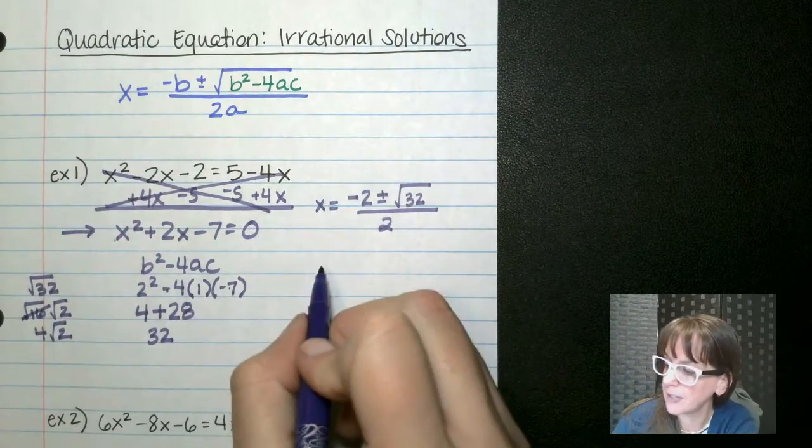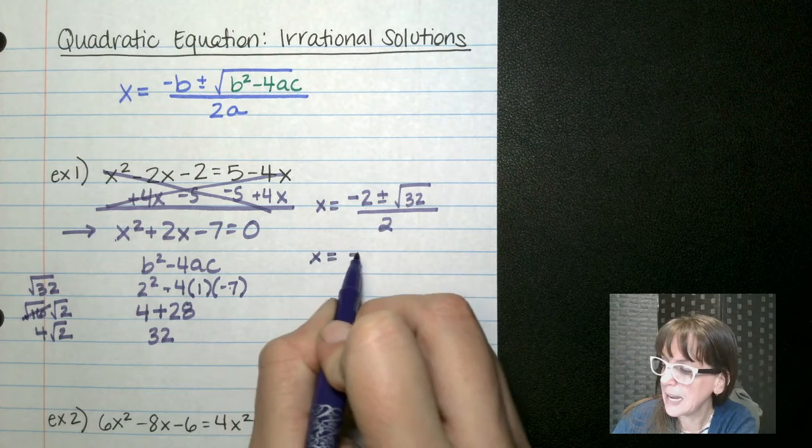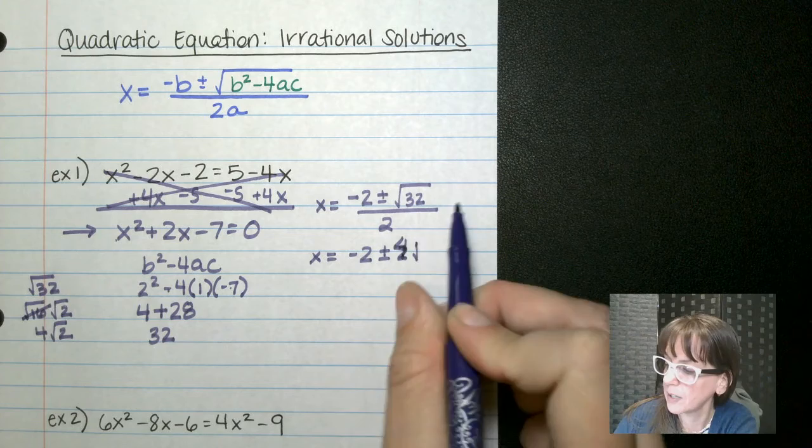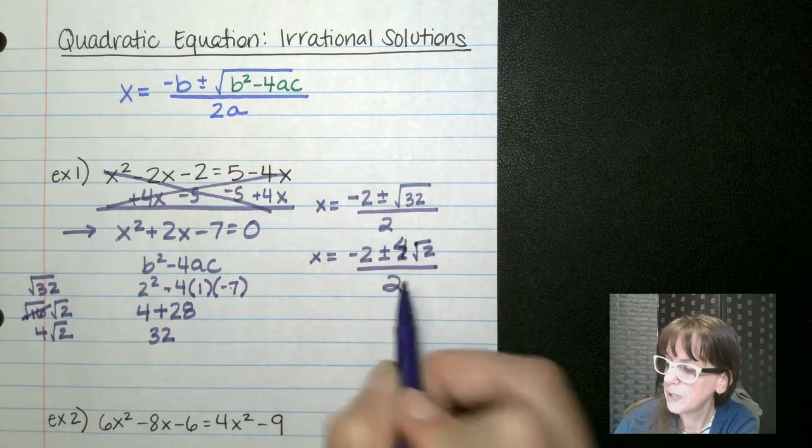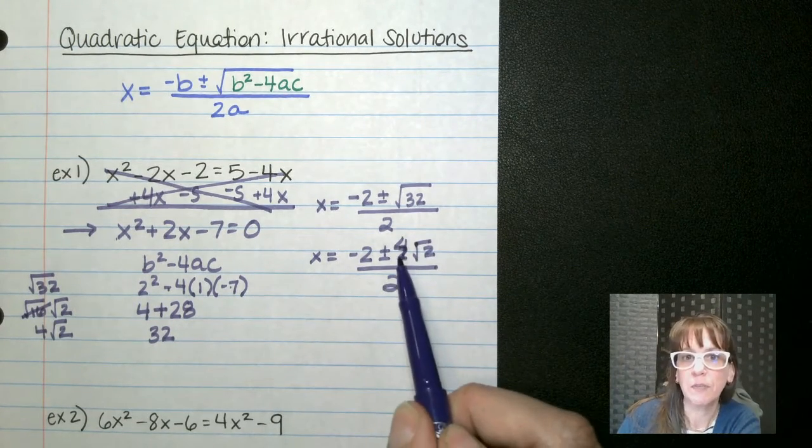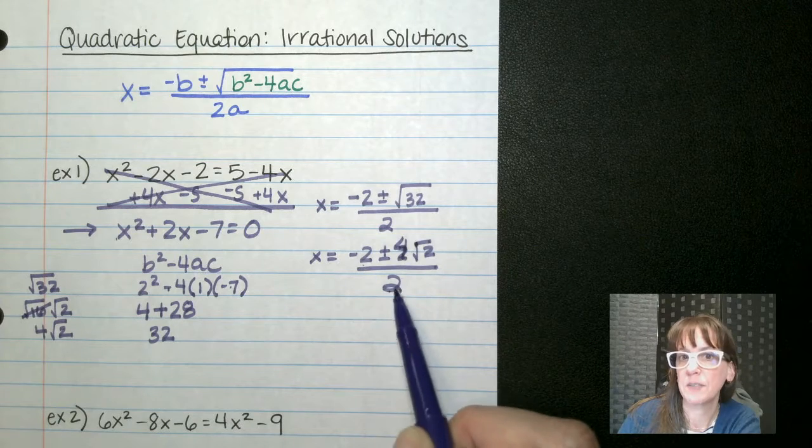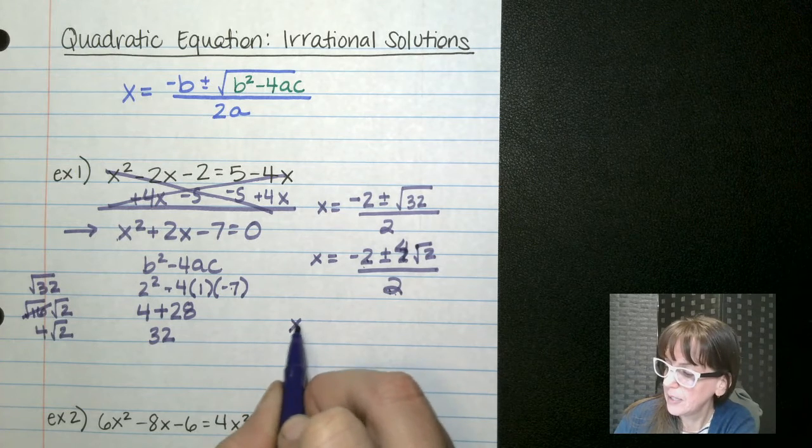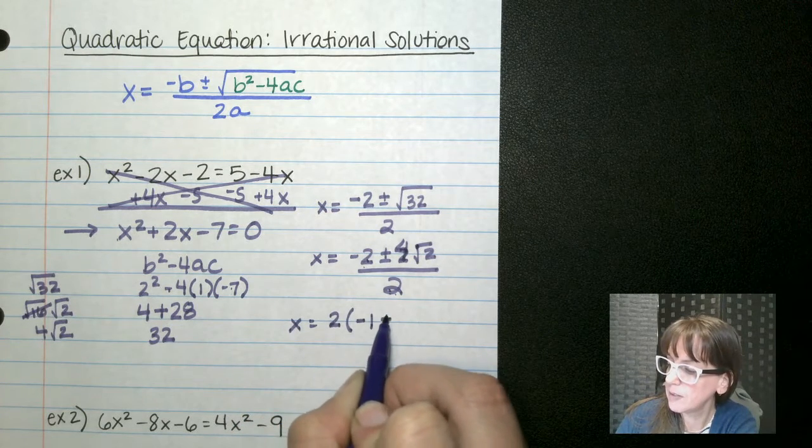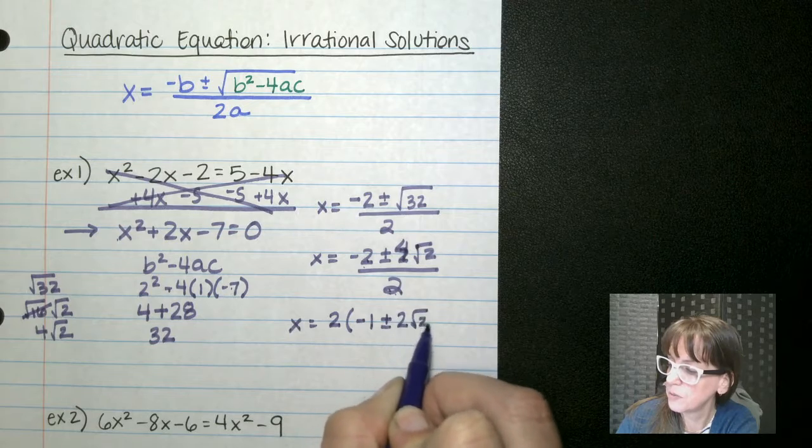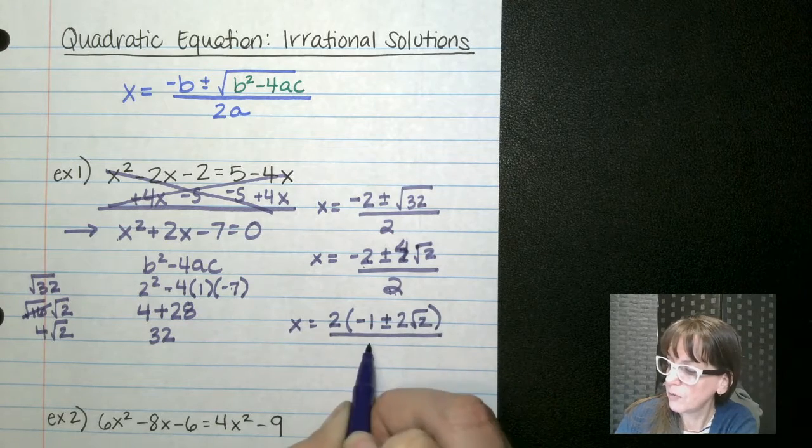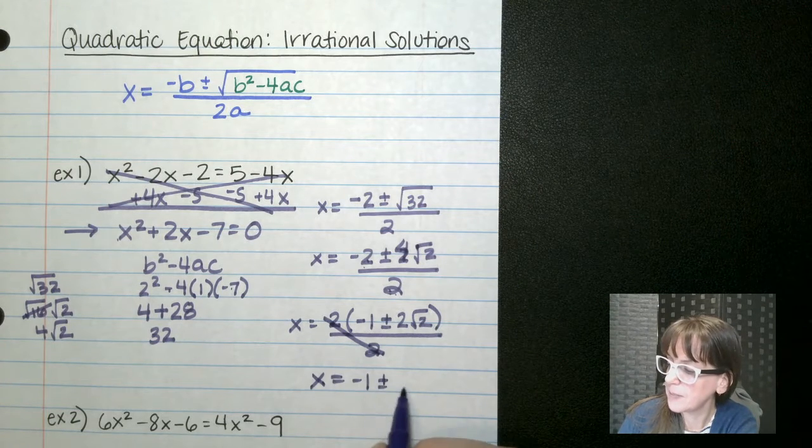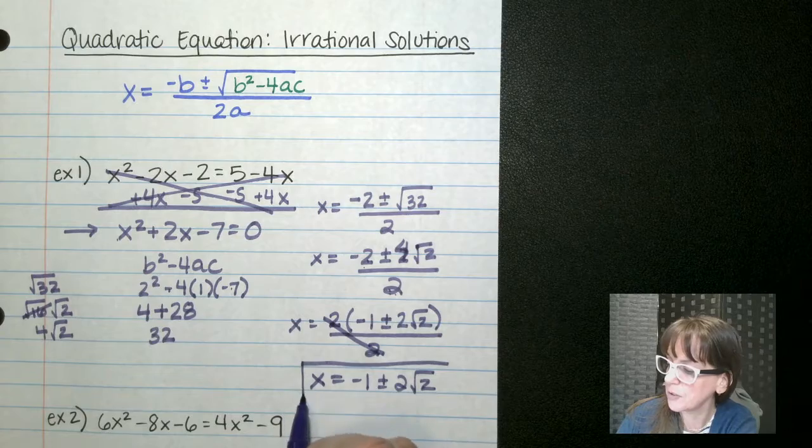Okay, so now what we have back over here is x equals negative 2 plus minus, that should be a 4, I'm so sorry, 4 root 2 over 2. So, you want to ask yourself, do these three things have something in common, 2, 4, and 2? They all have a 2 in common. So let's take that out. x equals 2, and that leaves us with negative 1 plus minus 2 root 2 over 2. These guys cancel out, and x equals negative 1 plus minus 2 root 2, and there is our solution.